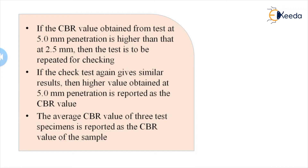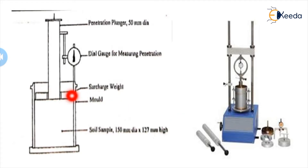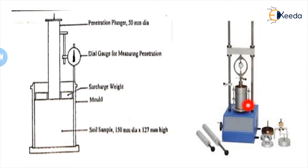The average CBR value from three test specimens is reported as the CBR value for the sample, since one single sample is not sufficient for accuracy. The CBR mold is 150 mm diameter and 127 mm height. A surcharge weight is placed over the soil sample, and a 50 mm diameter penetration plunger is applied. Dial gauges are attached to measure penetration.